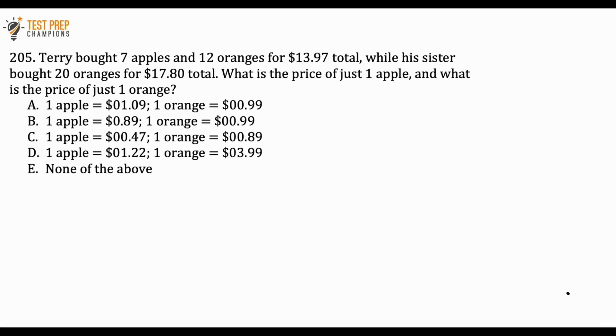Terry bought seven apples and 12 oranges for $13.97 total, while his sister bought 20 oranges for $17.80 total. What is the price of just one apple, and what is the price of just one orange? Now's your chance if you'd like to pause the video, try to figure this out, and whenever you're ready we'll go over the answer. There are actually two equations that we can write.